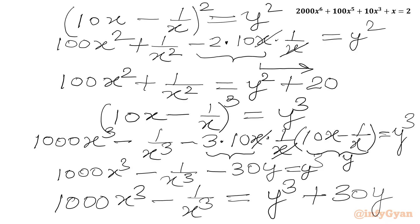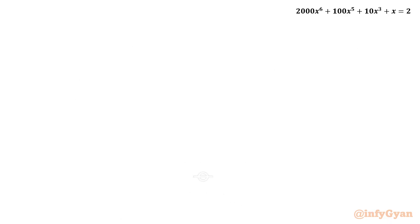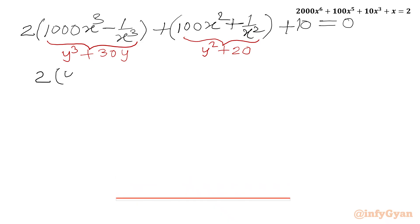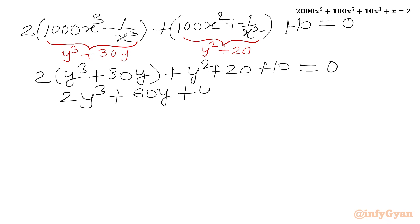Now we have both results. Putting them into our equation: 2 times (y³ + 30y) plus (y² + 20) plus 10 equal to 0. Simplifying the LHS gives 2y³ plus y² plus 60y plus 30 equal to 0.